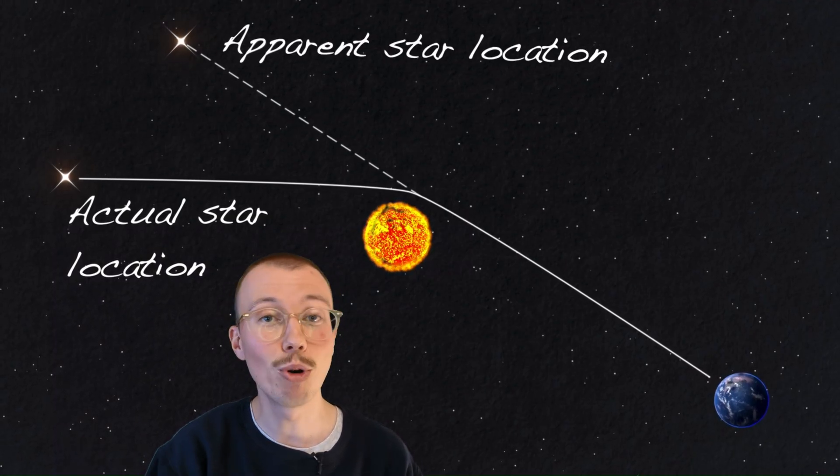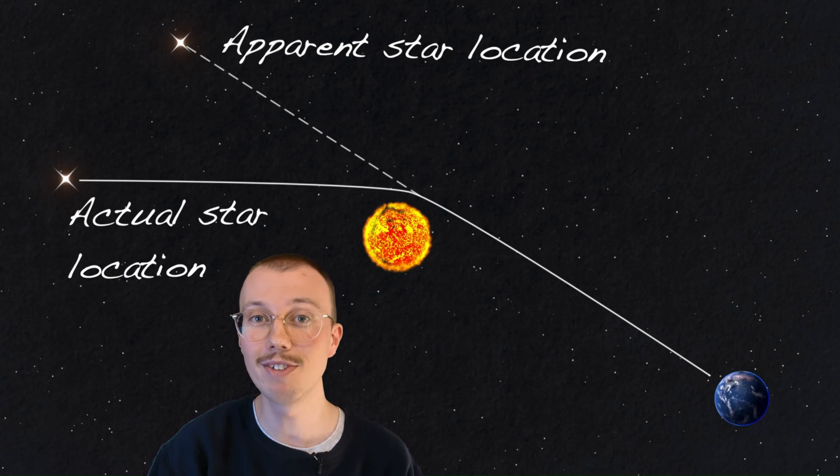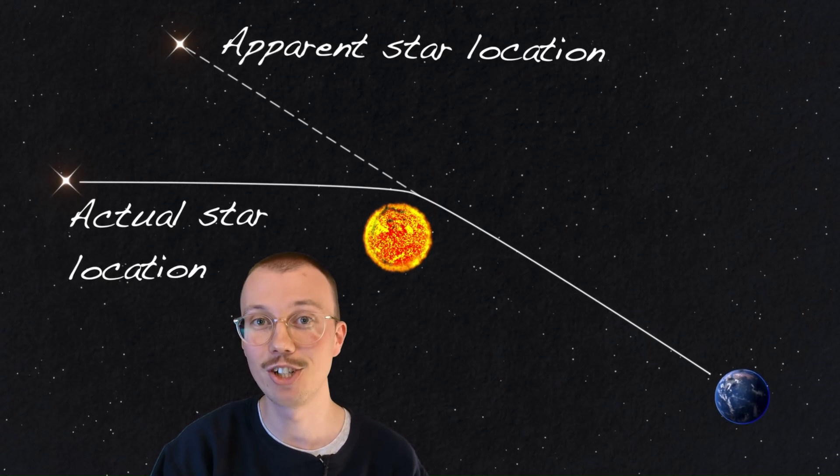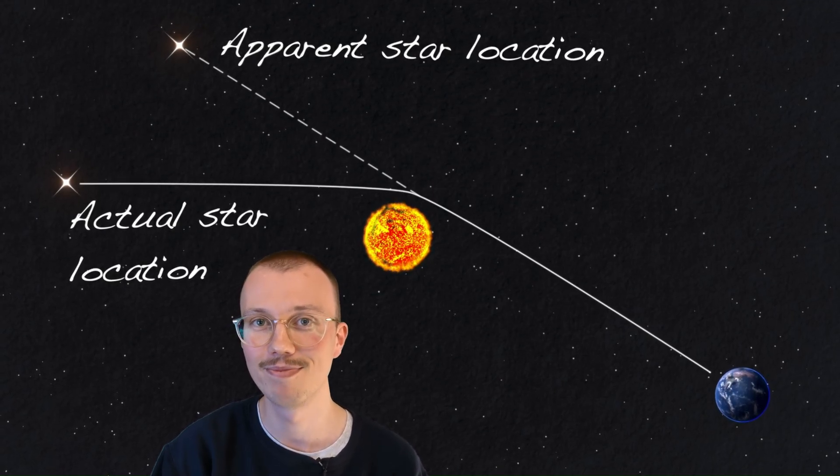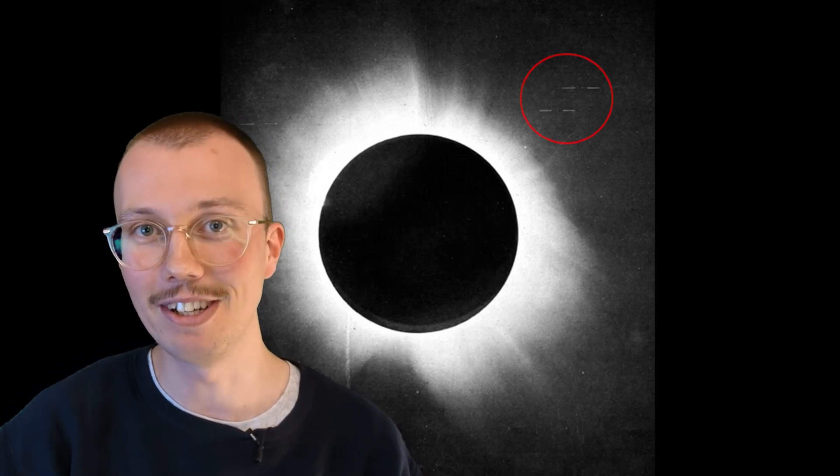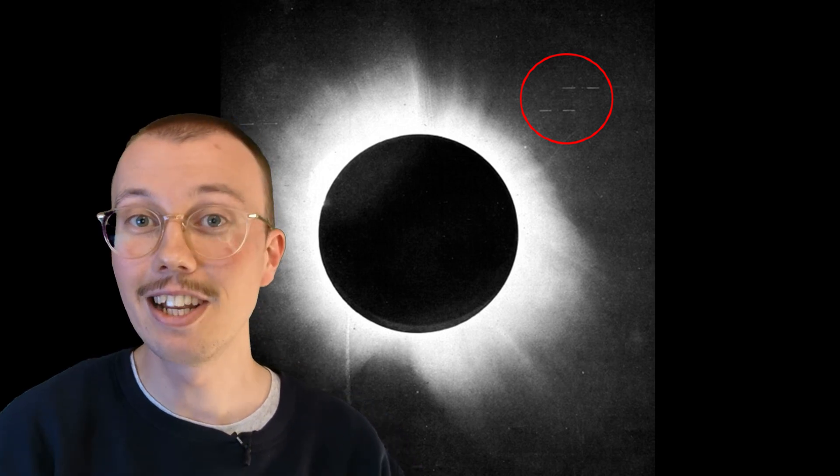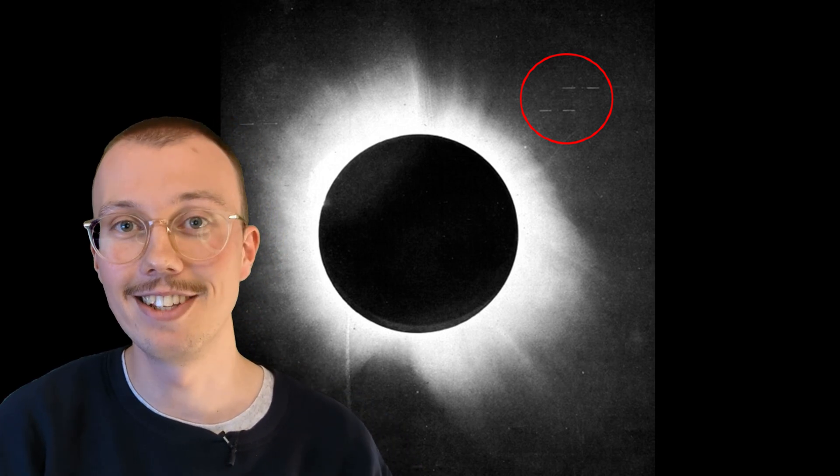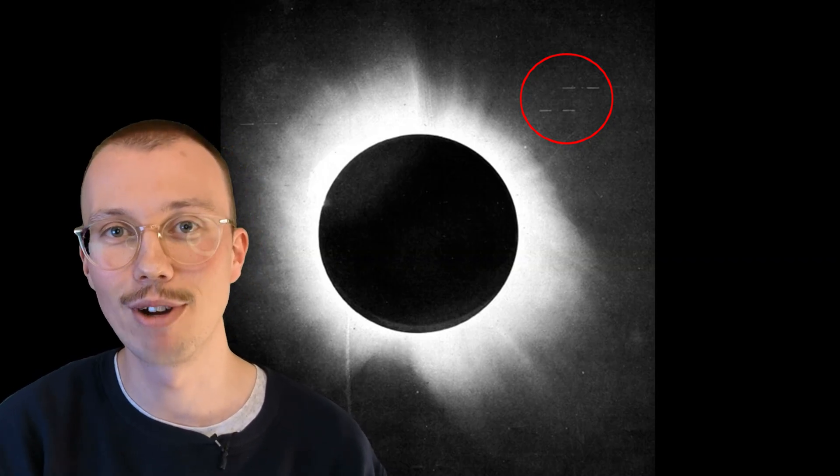So in 1919, four years after Einstein published the final version of his theory, astronomers tested it during a total solar eclipse. With the moon blocking out the sun's light, they could photograph the stars right next to it. And sure enough, the stars did appear shifted from their usual positions. This subtle effect is called weak gravitational lensing, and its discovery led to widespread acceptance of Einstein's theory of relativity.